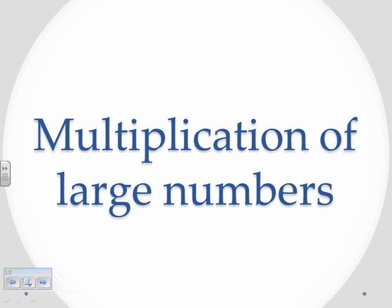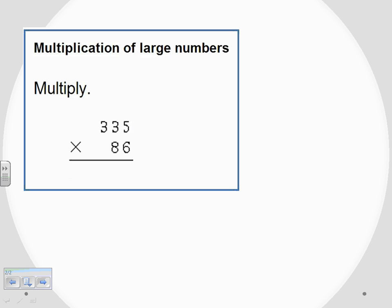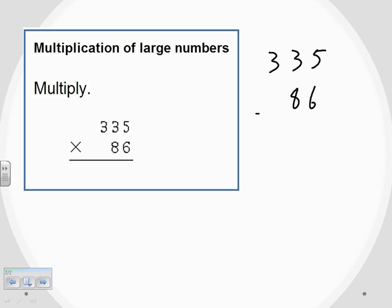Our problem set this time is multiplication of large numbers. Our example is 335 times 86. It's written vertically, which is the way we like it. I'm just going to give myself a little more room to work.